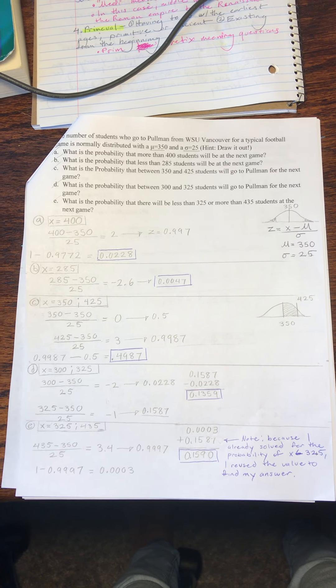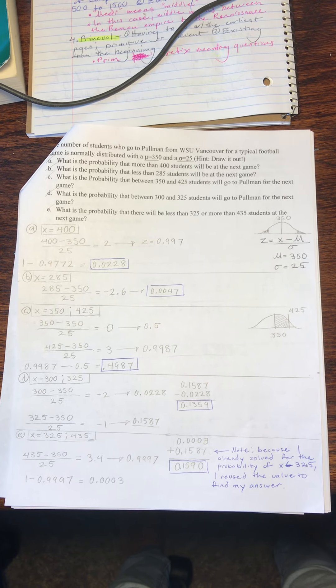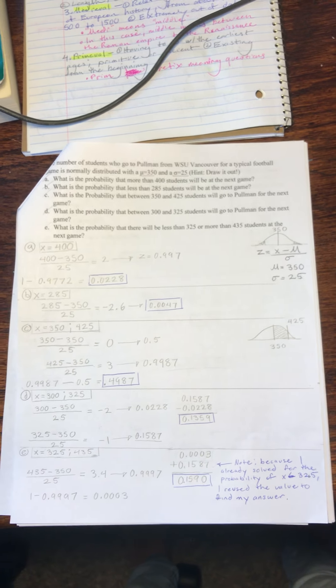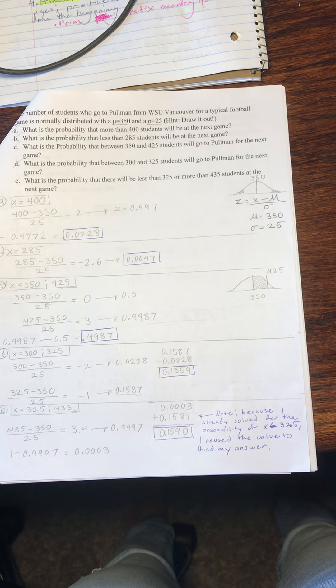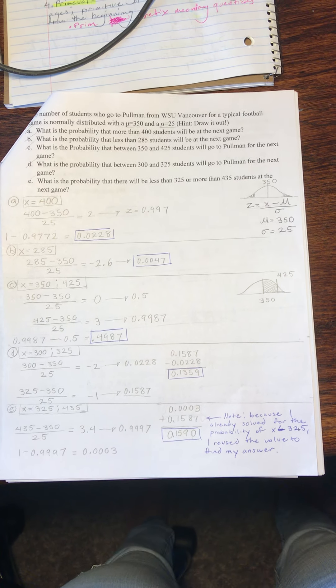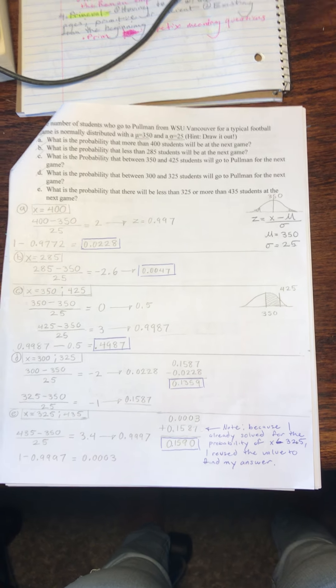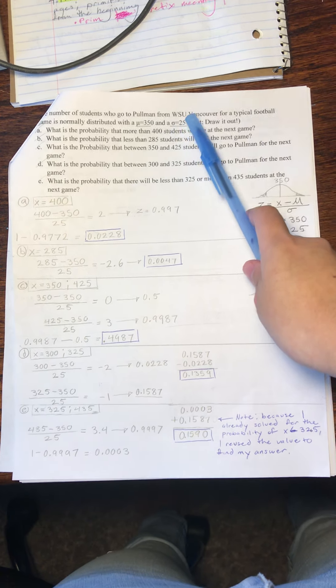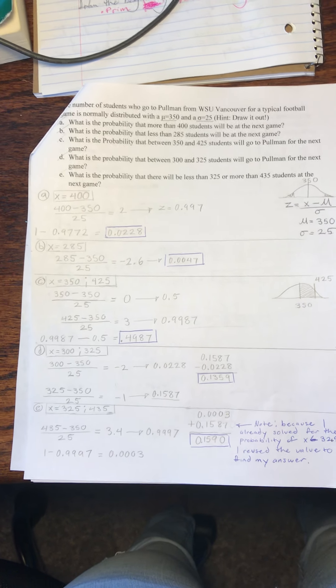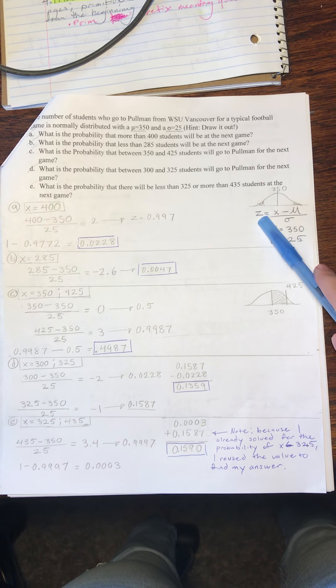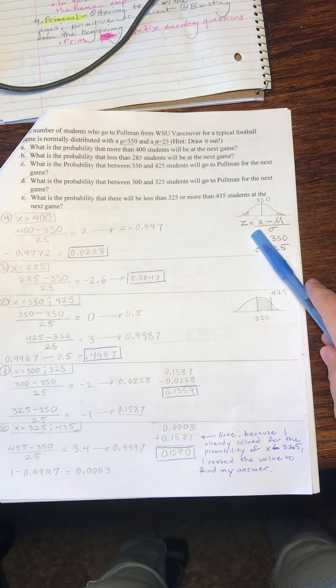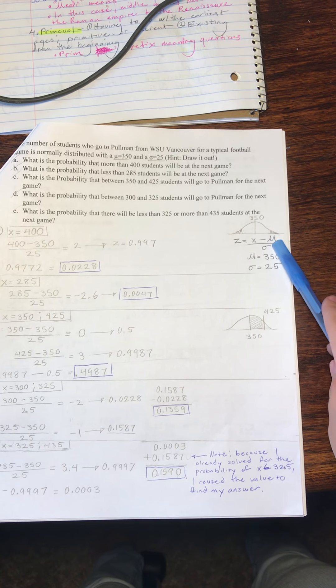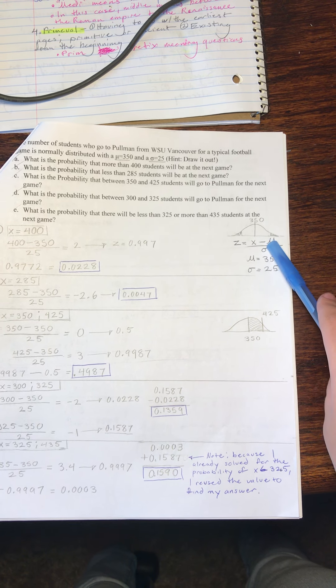Hi, I'm Vanessa Casillas and this is my video walkthrough for problem one of exam two. With this problem, we are solving for probabilities. We are given a mu of 350, a standard deviation of 25, and we are going to use this formula to find our probabilities, which is z equals x minus mu over standard deviation.